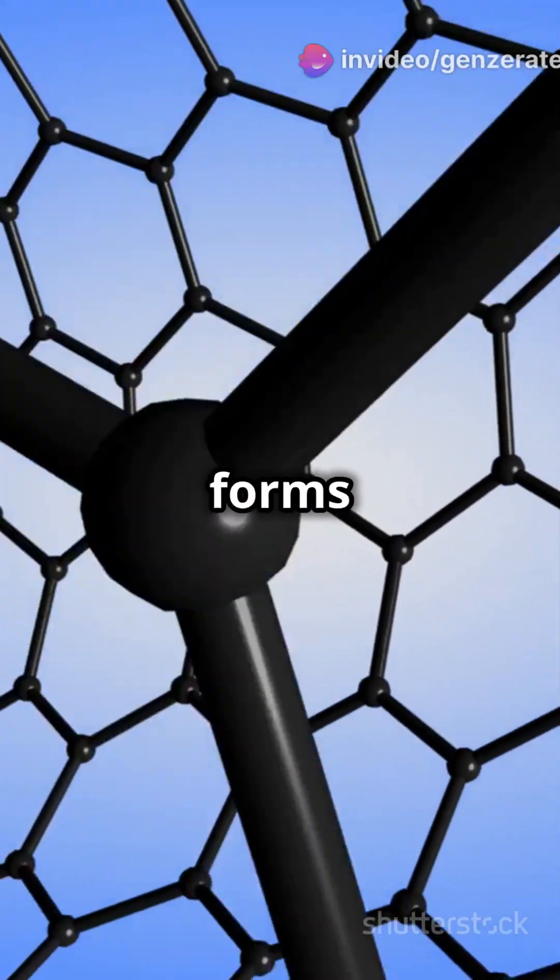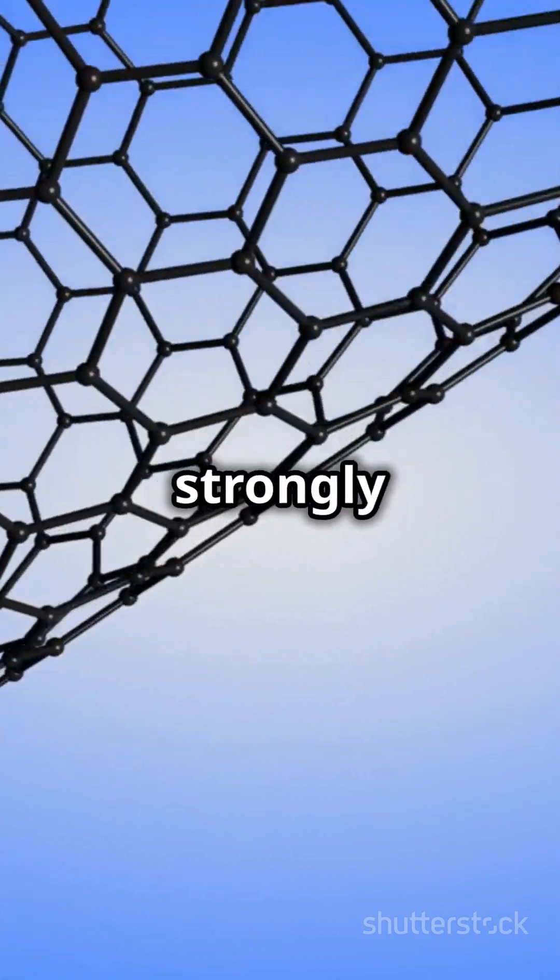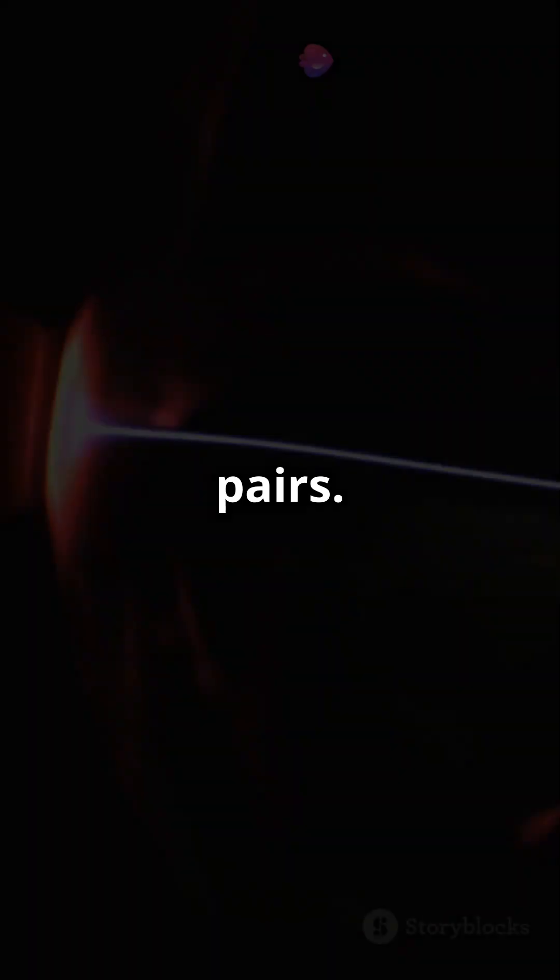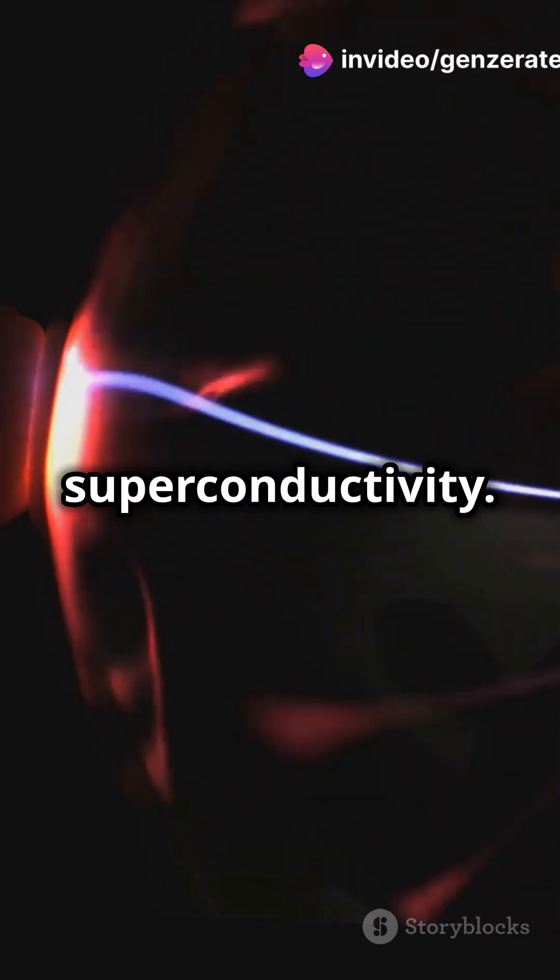This twist forms flat bands in the material's electronic structure, causing electrons to interact more strongly and form Cooper pairs. These pairs move without scattering, leading to superconductivity.